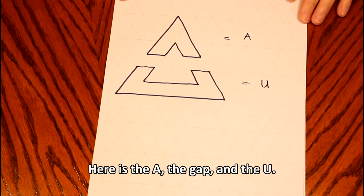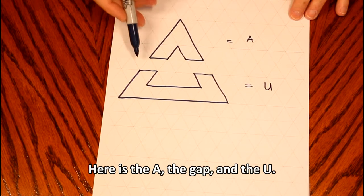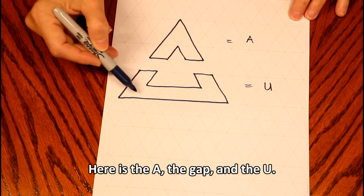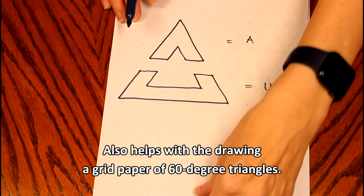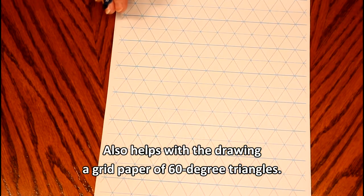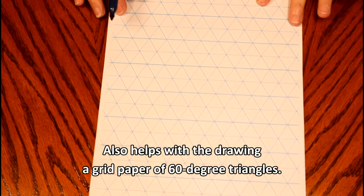Here is the A, the gap, and the U. Also helps with the drawing, a grid paper of 60-degree triangles.